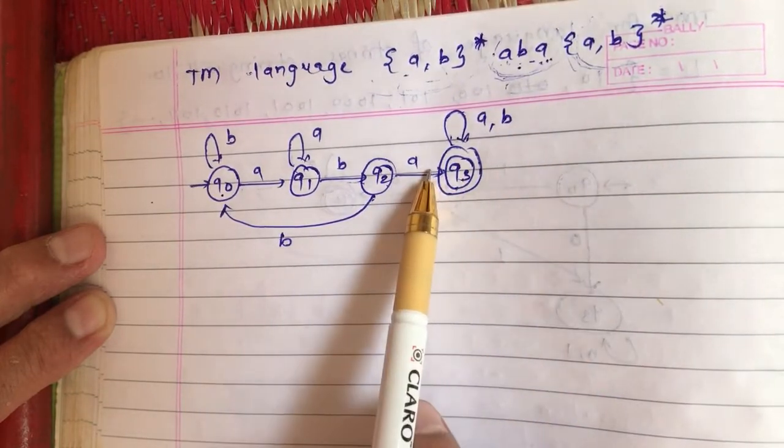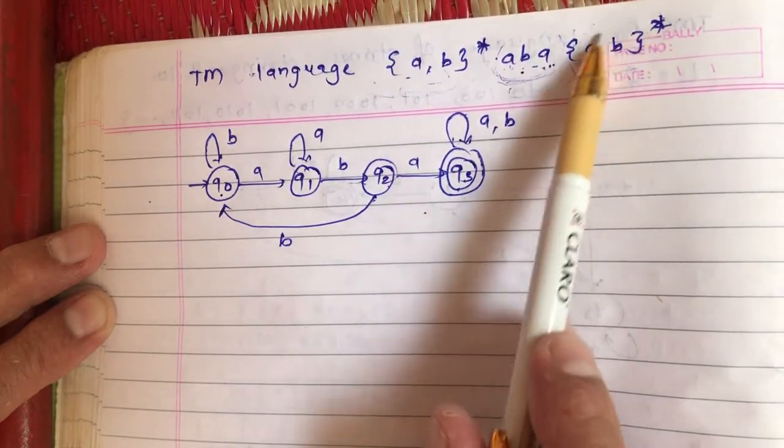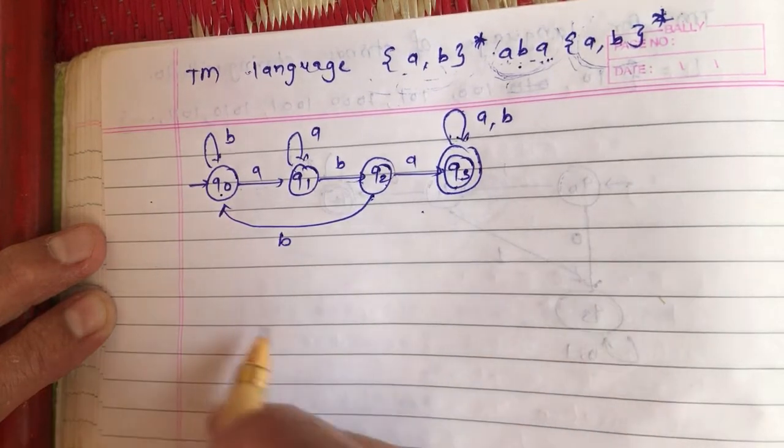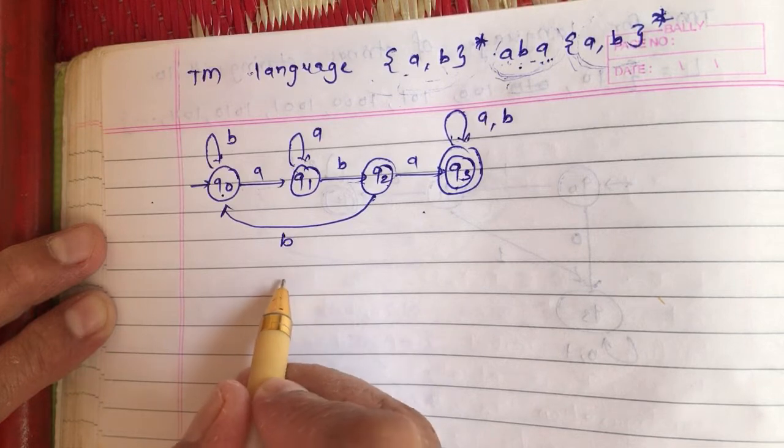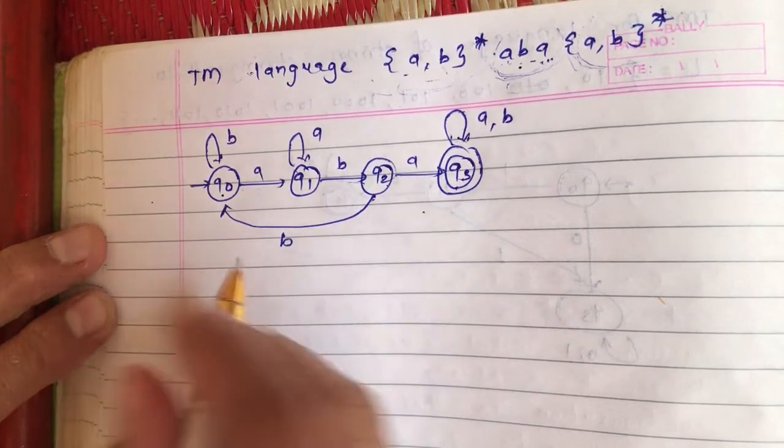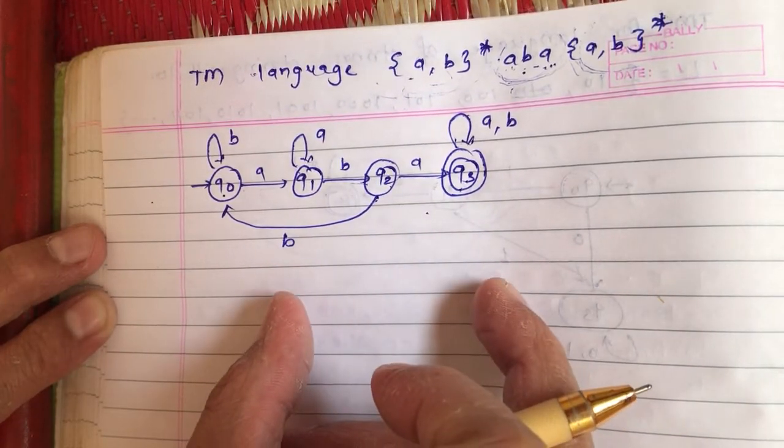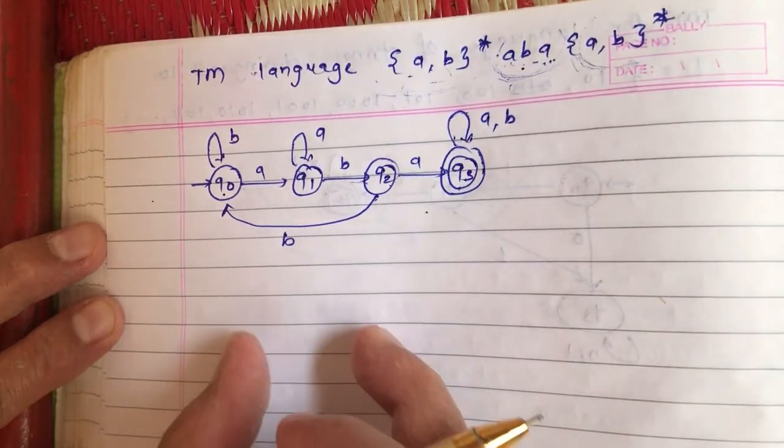For ha I will not have any a and b because we know that processing of this a comma b star is not required. There is an assignment for all students: you need to draw a Turing machine for this language based on whatever inputs I have given you.